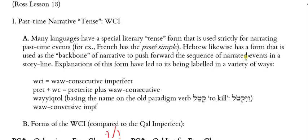Explanations of this form have led to its being labeled in a variety of ways. WCI is one abbreviation for this type of form, and that stands for 'vav consecutive imperfect.' That is to say the form looks like an imperfect form — which is what we just learned in chapter 17 — but with a special vav in front of it that makes it a past-time narrative form occurring in consecutive actions: John did this, and then he did this, and then he did this.